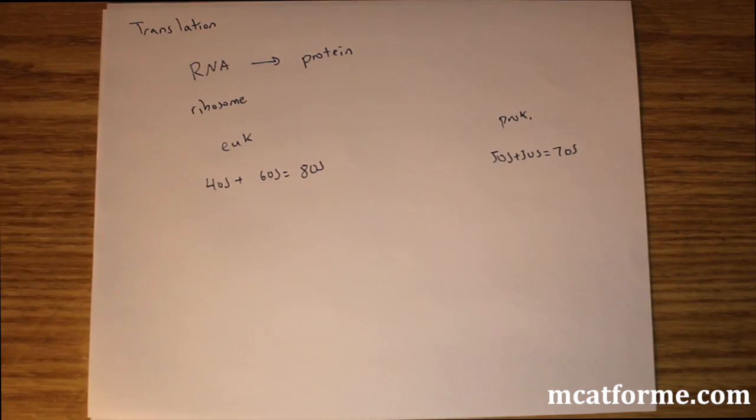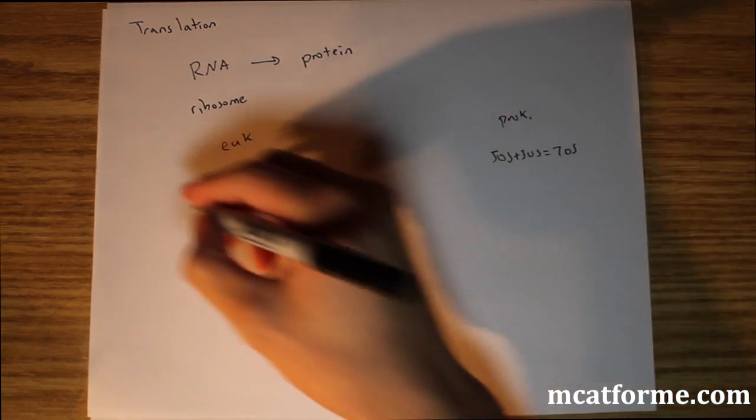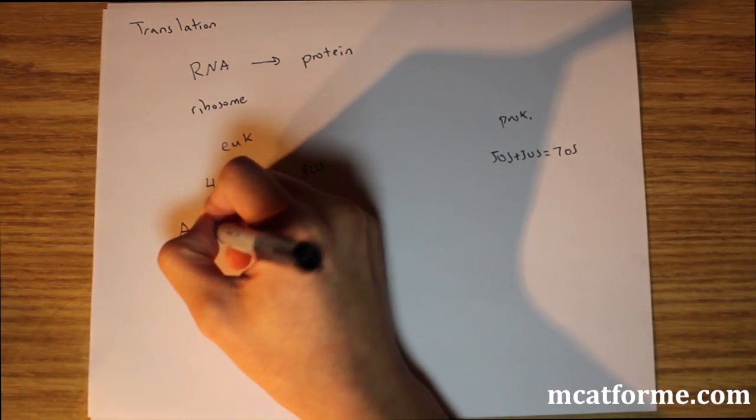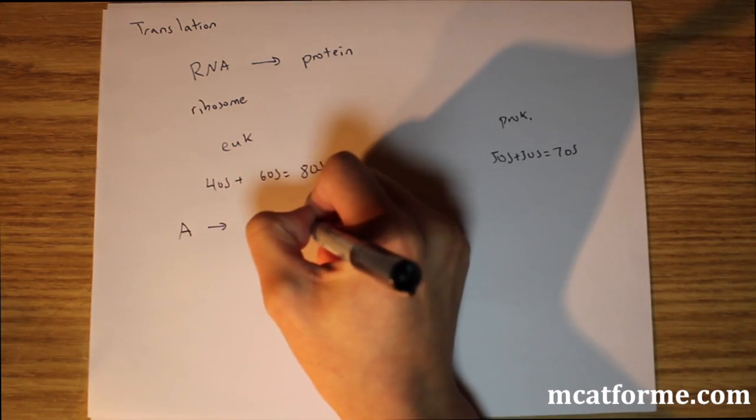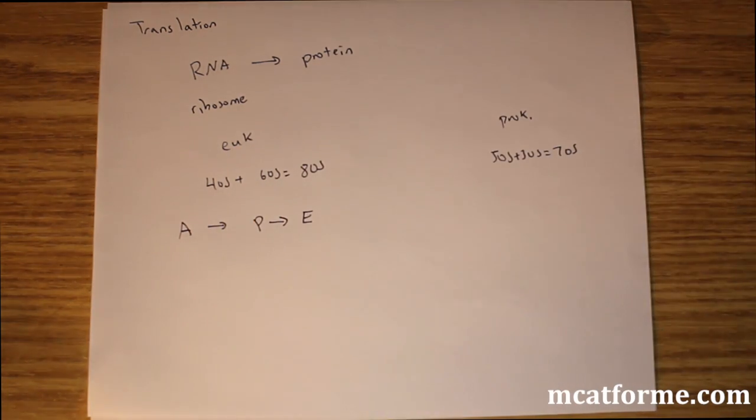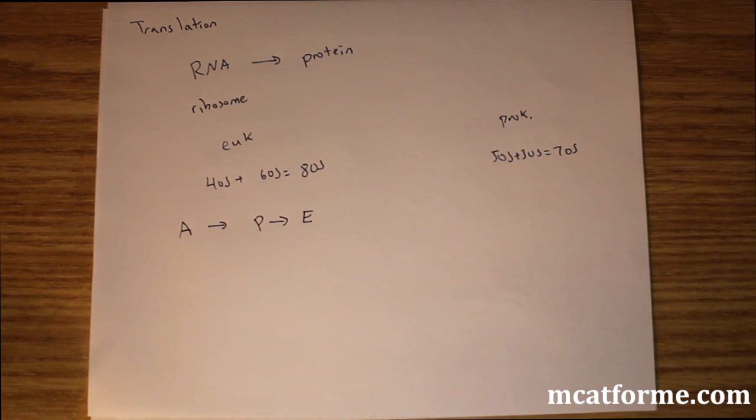And so translation. So this translation, pretty much all we really need to know is that it goes from RNA to protein. And there's three different sites. We have the A, the P, and the E site. And different things happen in each one. It's not so much important. We just need to know that there's three sites for the MCAT. It's just that translation has three different sites, the E, the P, and the A.